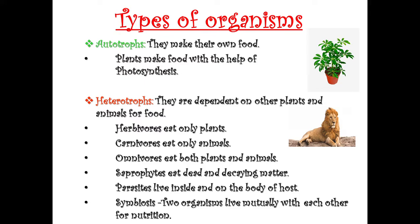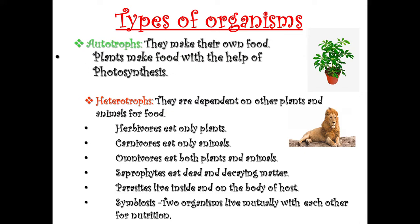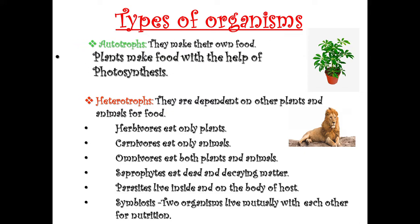There are two types of organisms: autotrophs and heterotrophs. Autotrophs make their own food. The best example is plants — plants make food with the help of photosynthesis.